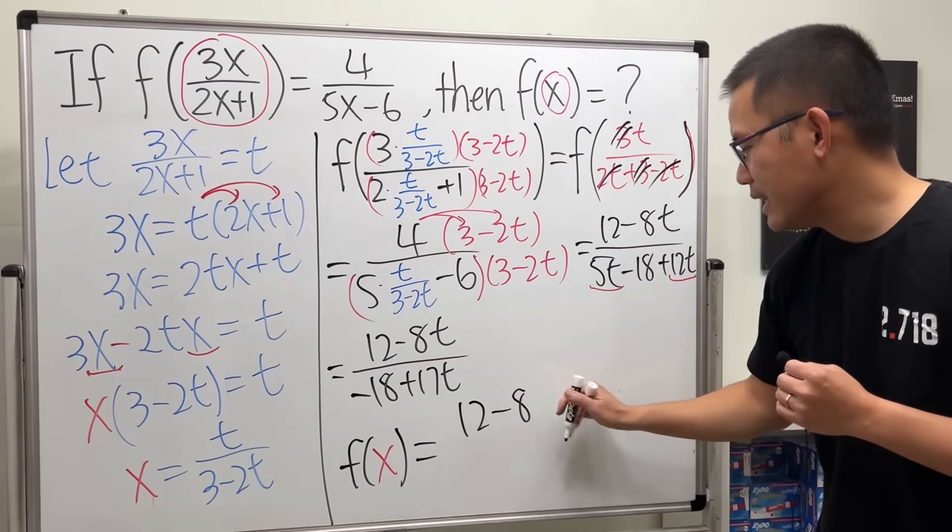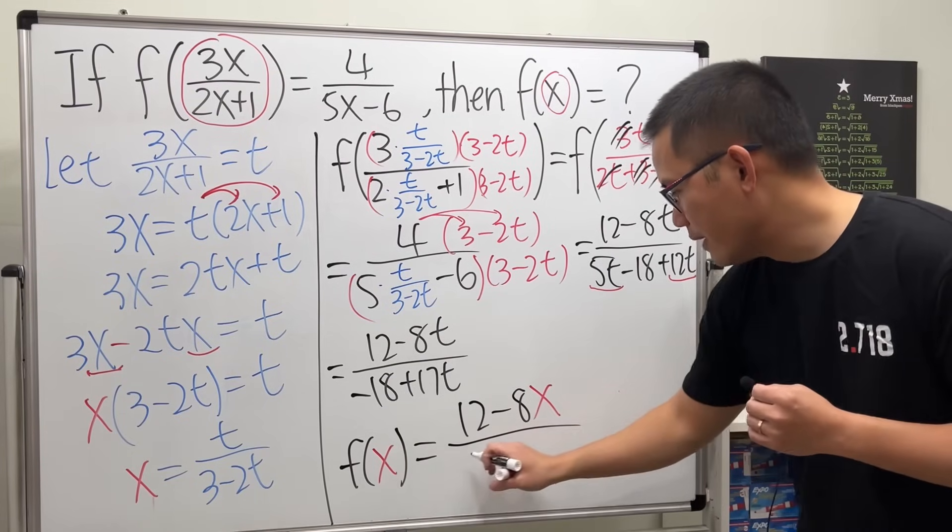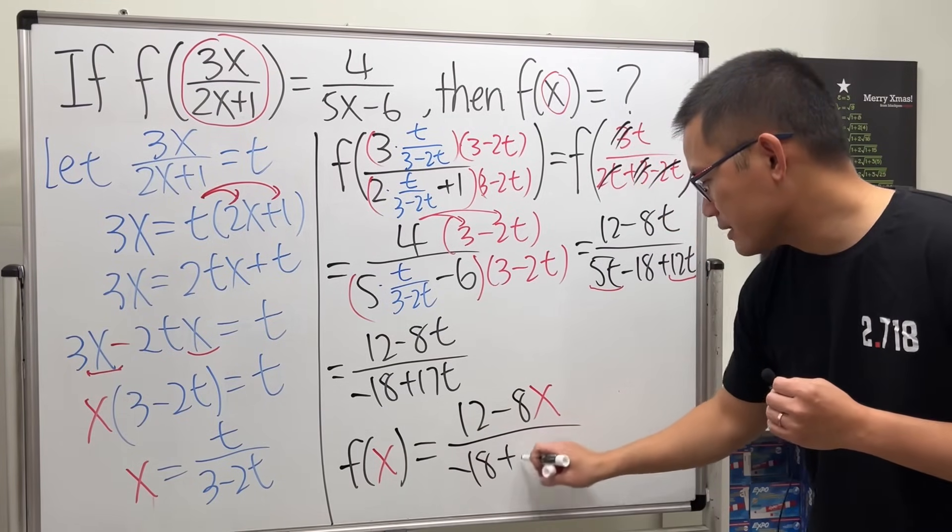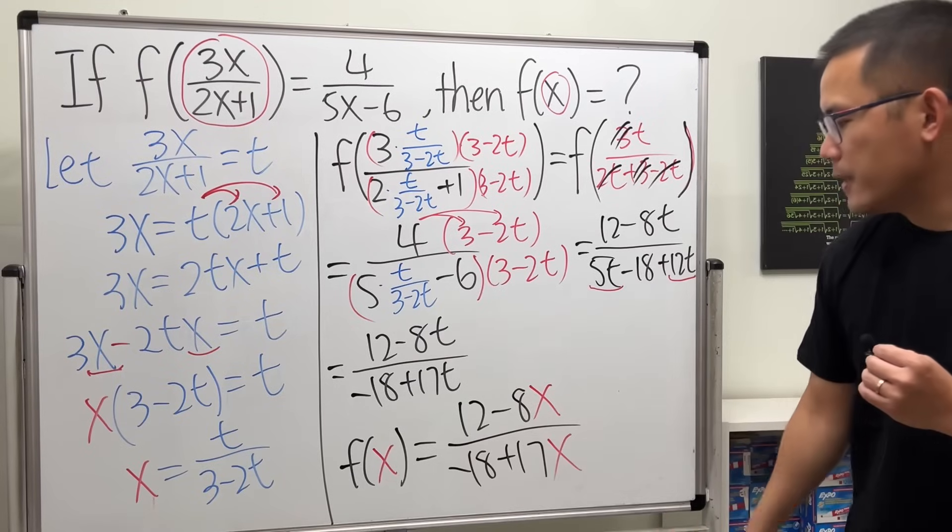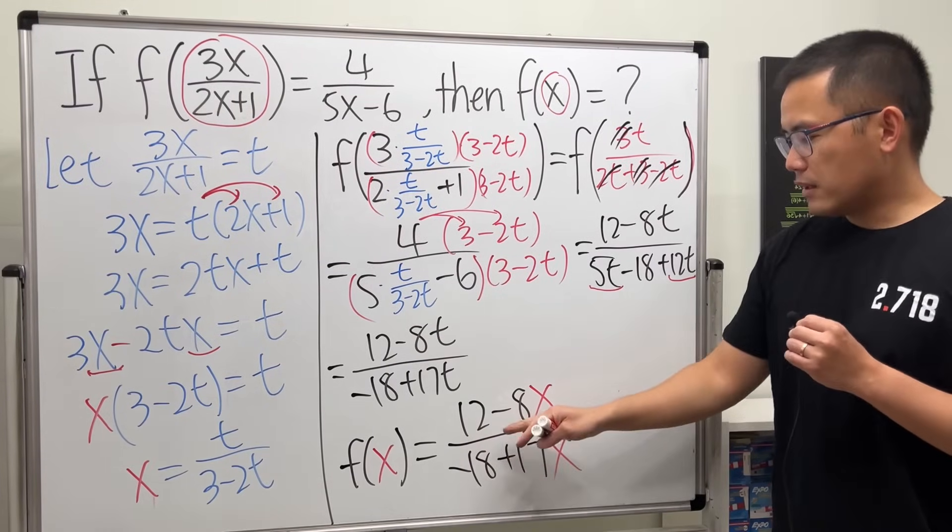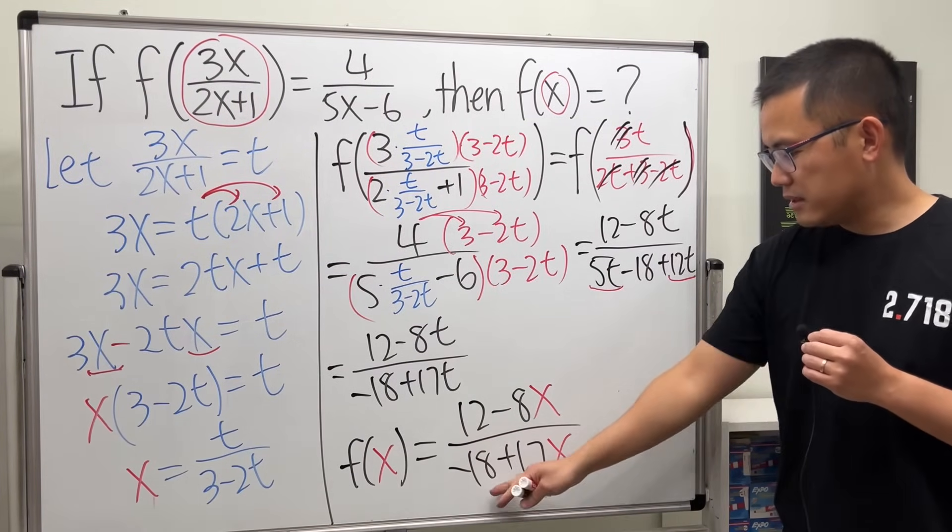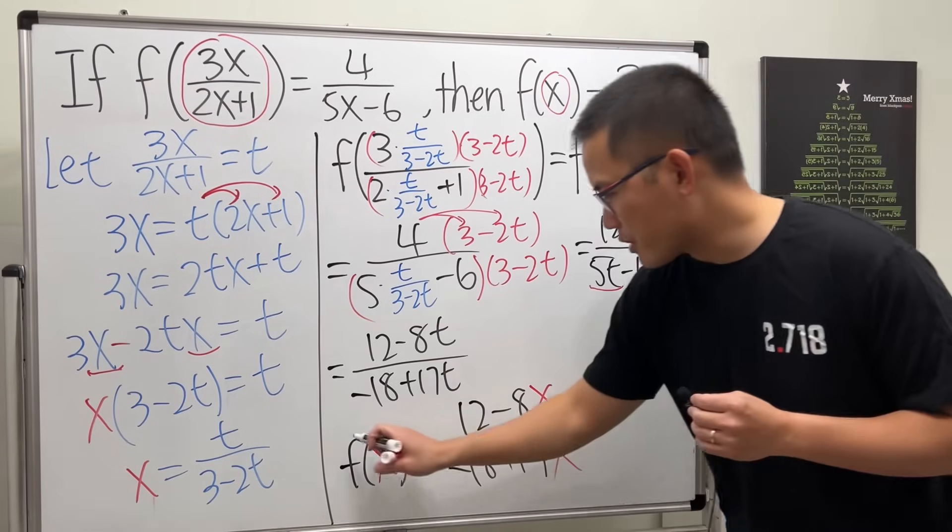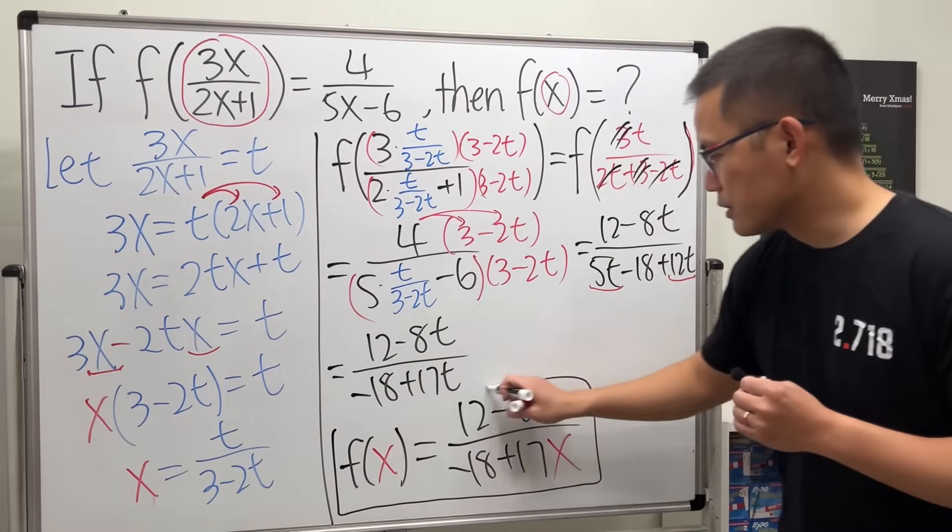I will write it as 12 minus 8x over negative 18 plus 17x. I know on the top you can factor out 4 or so, but nothing can be reduced, so I think this is a perfectly okay answer. I'll just box it like this.